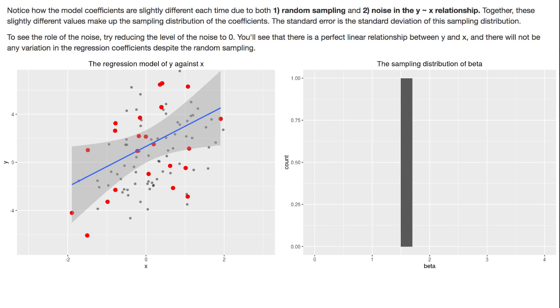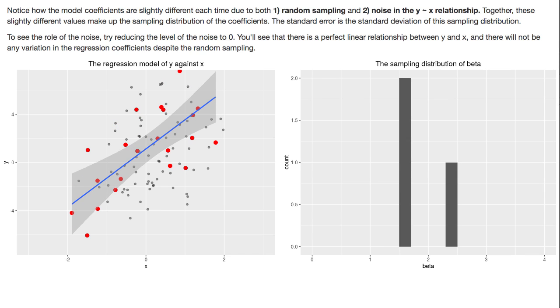So if we take another sample this time again we sample different data, we've got a different line of best fit and this time the beta 1 that we get is 2.4, so it's overestimated the true value, and you can see now on the histogram on the right we've got a value for 2.4 emerging as a bar with a count of one.